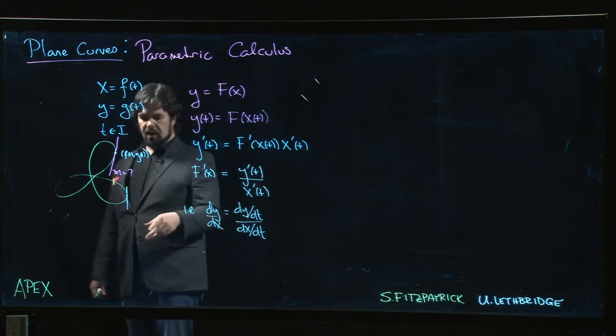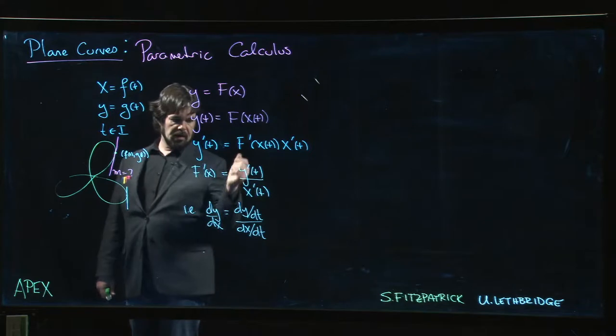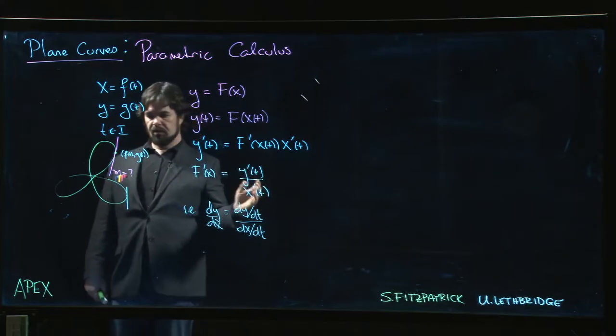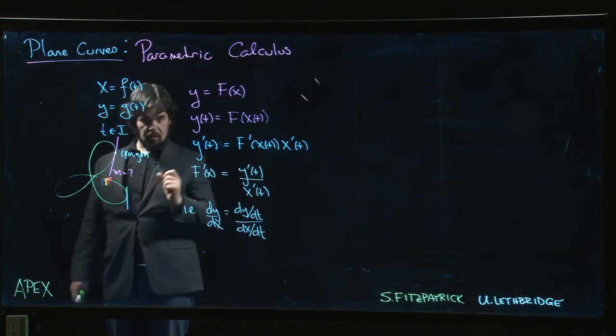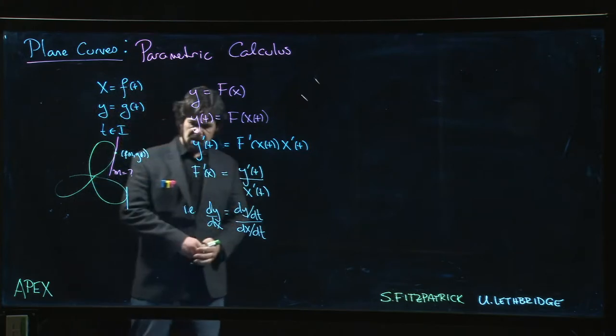Well again, vertical tangents happen where the denominator is zero—they happen when x' is zero. And this makes sense: the vertical tangents happen when x is stationary, just as horizontal tangents happen when y is stationary. We kind of already understand that from Calc 1.